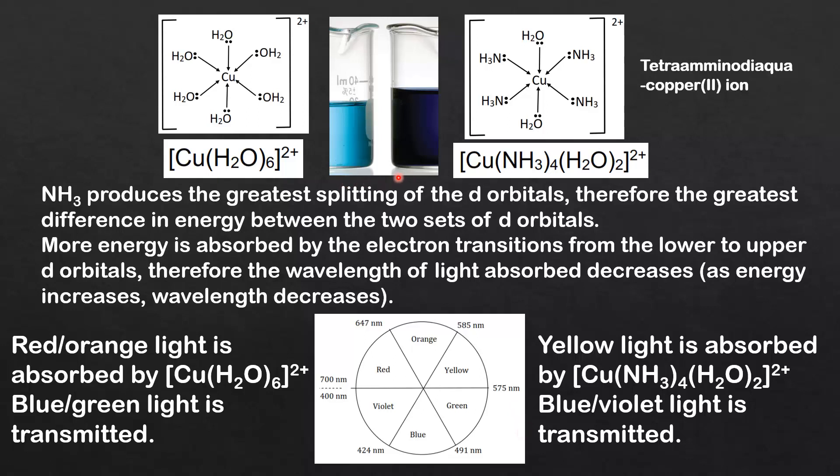This shows how changing the ligand affects the color of a complex ion. We can use the spectrochemical series to determine the amount of splitting of the d orbitals when the ligand bonds to the central metal ion. In this example by changing the ligand from water to ammonia we increase the splitting of the d orbitals. That means the wavelength of light absorbed decreased.